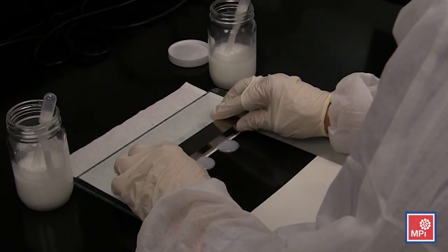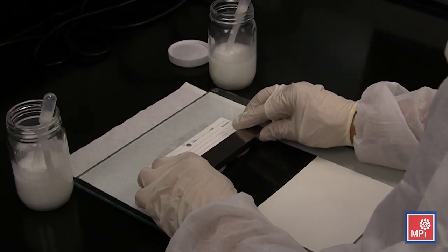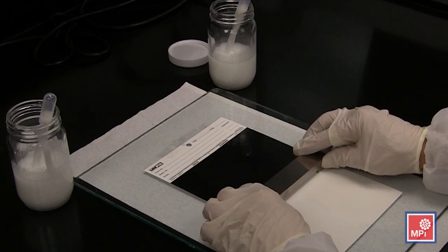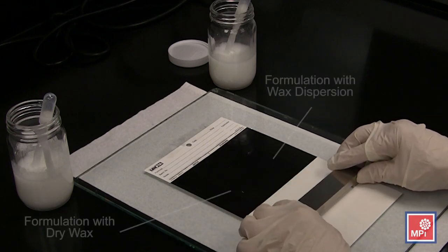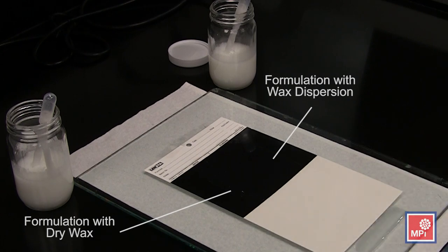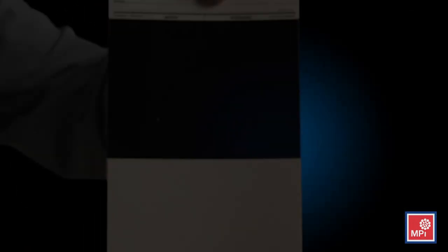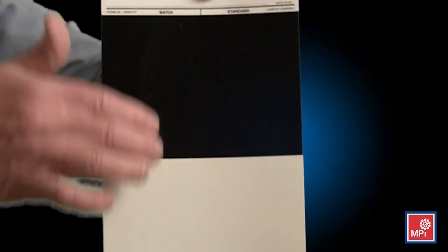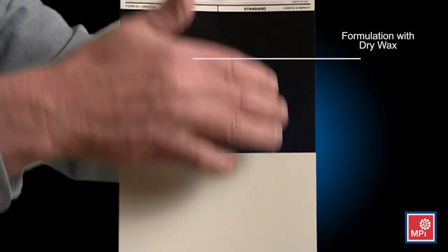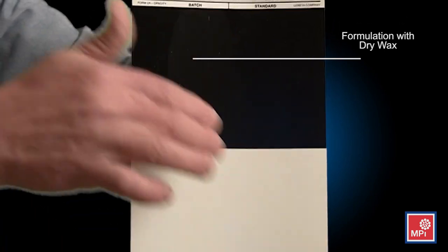A drawdown of a formulation containing a properly dispersed wax on the right versus the same formulation that incorporated the dry powdered wax on the left will underscore the importance of proper wax dispersion. As the formulations dry, the agglomerated wax on the left will float to the surface, resulting in film defects and poor end-use performance.